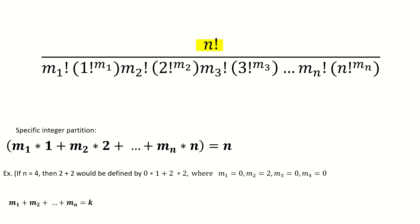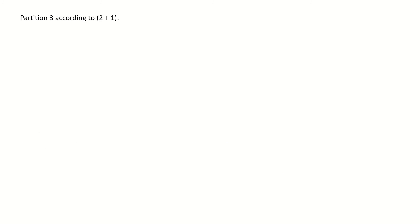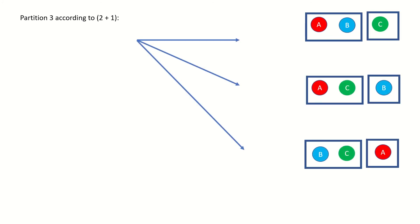You may be wondering how this formula is derived. Let's find out by working through some examples. First, what are the ways to partition a set of three distinct elements according to the specific integer partition 2+1? It is 3 choose 2, since when we choose the 2-element subset, we are automatically choosing the remaining 1, as the order of subsets doesn't matter.